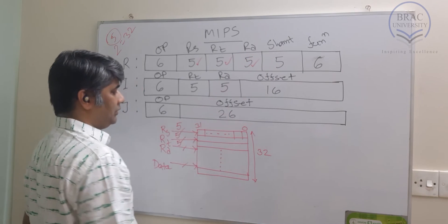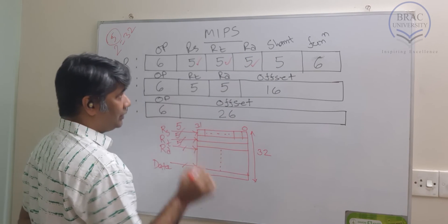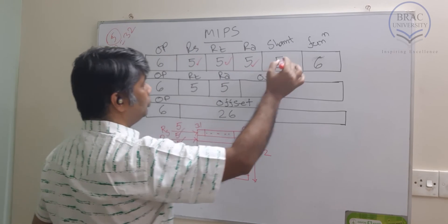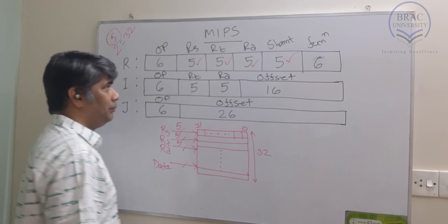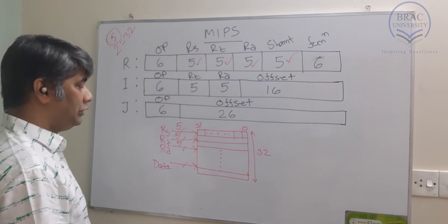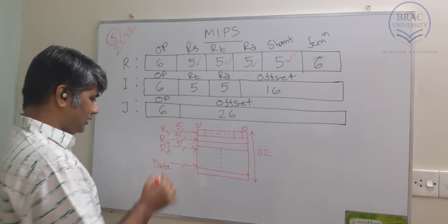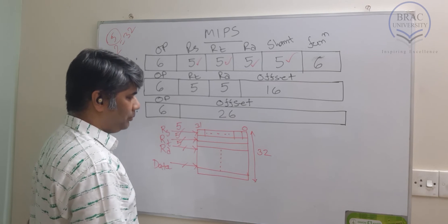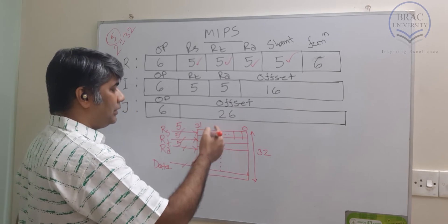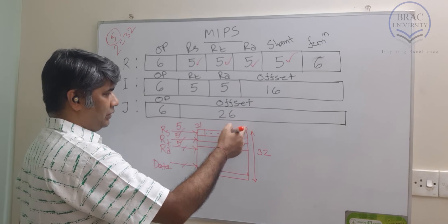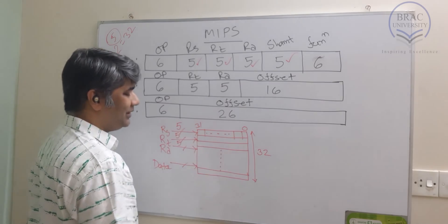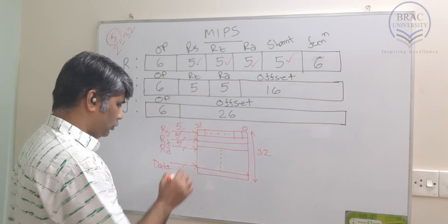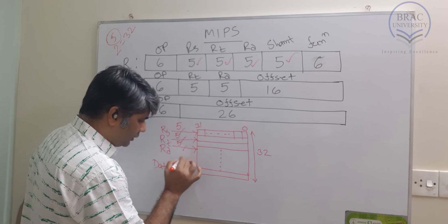We have 5 bits for the register fields. Since the registers are 32 bits, the shifting can also be represented with 2 to the power 5, which is why we have 5 bits in the shift field. The bit length of each register in the data field is 32 bits — because from 0 to 31, each register can store 32 bits of value.